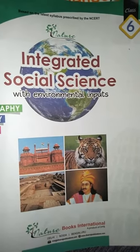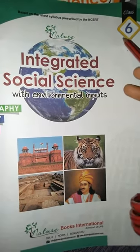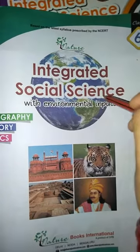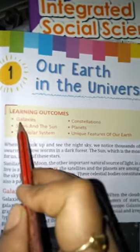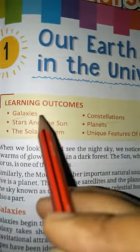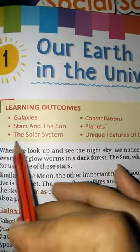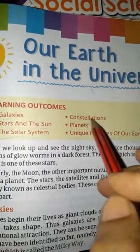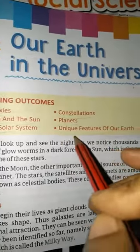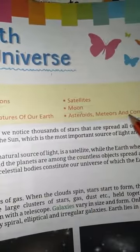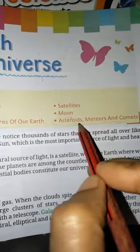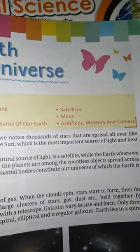Hello students, welcome once again in online classes. This is class 6 social science. We are studying lesson 1, 'Our Earth in the Universe.' We have studied about galaxies, stars and the sun, the solar system, constellation, planet, unique features of earth, satellites, and moon. Now we are going to study about asteroids, meteors and comets. Let's start.